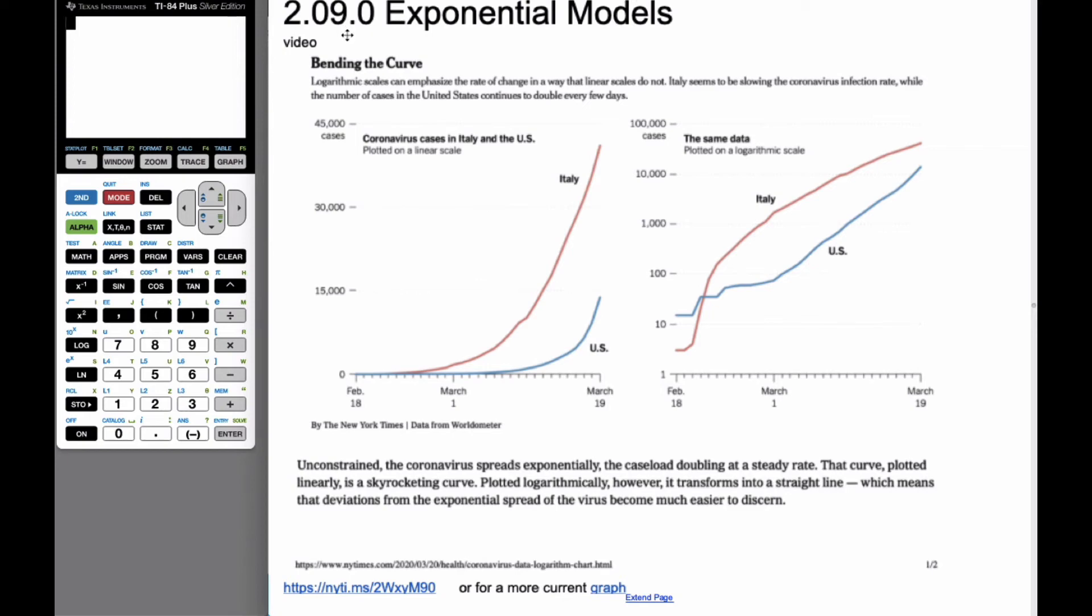So today we're looking at exponential models. The first thing I want to talk about is back in March of 2020 when the coronavirus was just starting to hit Italy and the U.S. and we're comparing them. There was a curve shown in the New York Times. This is what they showed. They showed Italy being red, looking exponential, and also the U.S. being blue, looking exponential.